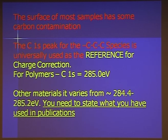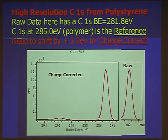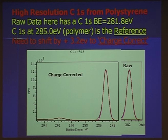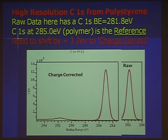They should state: 'adventitious carbon was used at 284.8' — that's important. If they don't put that in, there could be a 0.6 eV discrepancy. Here's that same high-resolution carbon 1s spectrum from polystyrene — it was coming in at about 281.8, and with the software we need to shift it up, adding 3.2 to give the charge-corrected absolute value of 285. And you shift all the peaks by the same amount — you don't shift carbon then shift oxygen differently. I've seen some people publish uncorrected data and it is so confusing.